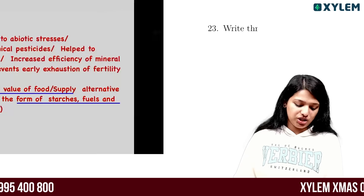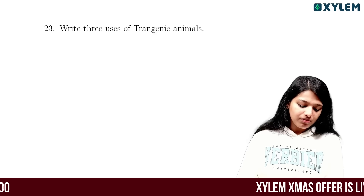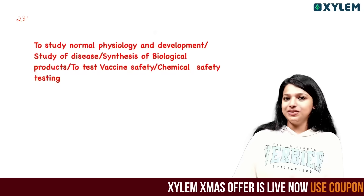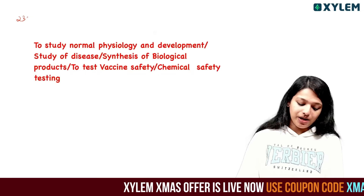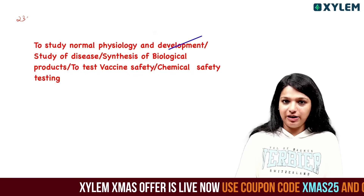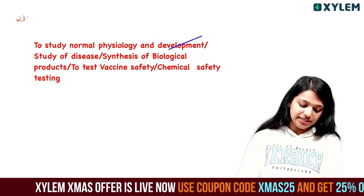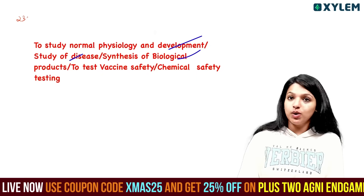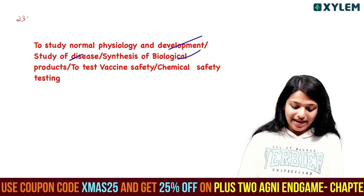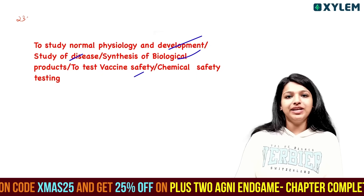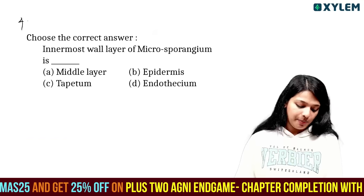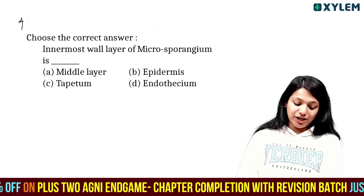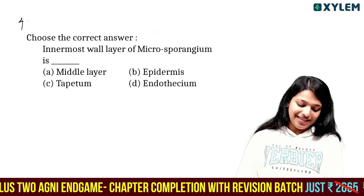Transgenic animal uses: 1. Physiology and development studies. 2. Disease models. 3. Synthesis of biological products. 4. Vaccine safety testing. 5. Chemical safety testing.